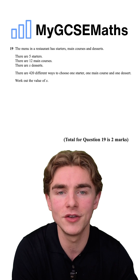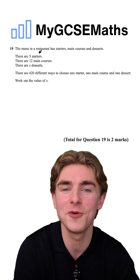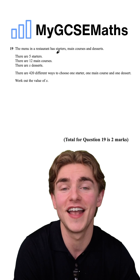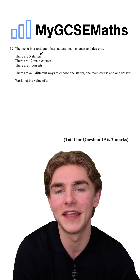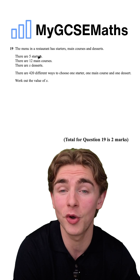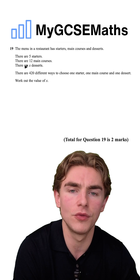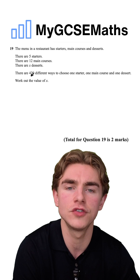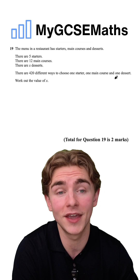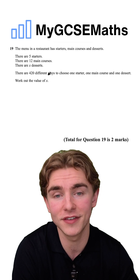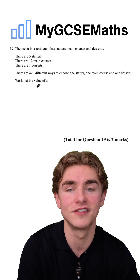The question says: the menu in a restaurant has starters, main courses, and desserts. There are five starters, there are 12 main courses, and there are X desserts. We're told that there are 420 different ways to choose one starter, one main course, and one dessert. Work out the value of X. This is a classic combinations question.